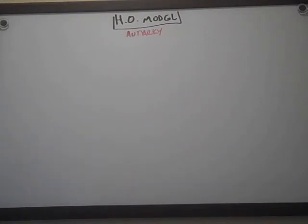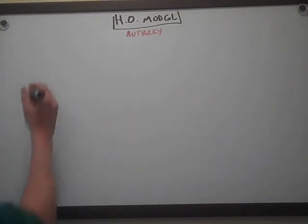This is part one for the HO model. We're going to set up in this video the model for home and row, assuming that we are in autarky. If you want to see how trade works in the HO model you'll have to go to the next video. This one is just going to look at autarky.